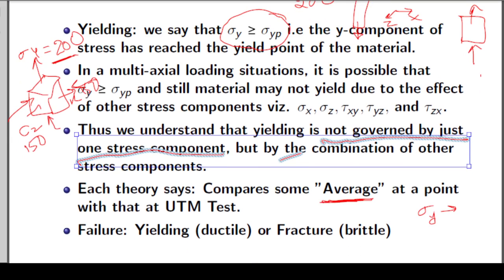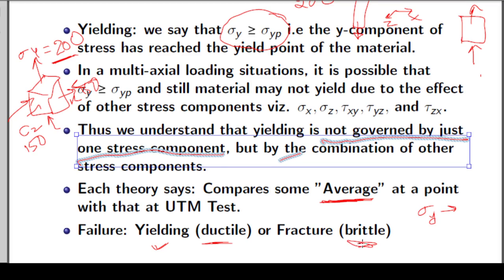As already discussed, if it is a ductile material, failure is nothing but yielding itself — the moment it starts yielding, the component has failed. For a brittle material, there is no yield point stress, so we say the moment it fractures, that is the failure. So for ductile materials, yielding is the failure criterion, and for brittle materials, fracture is the failure criterion.